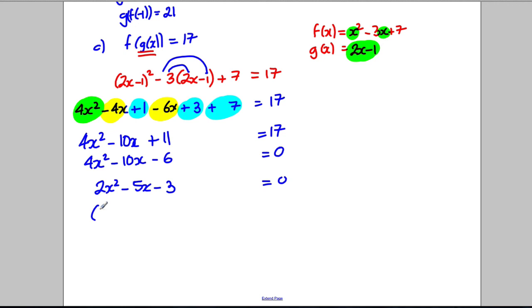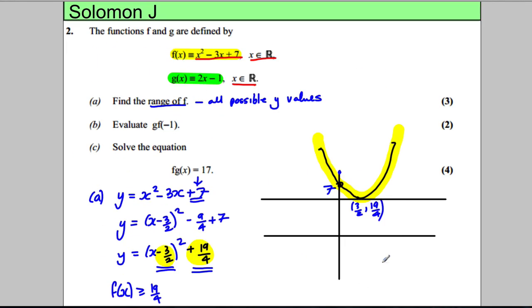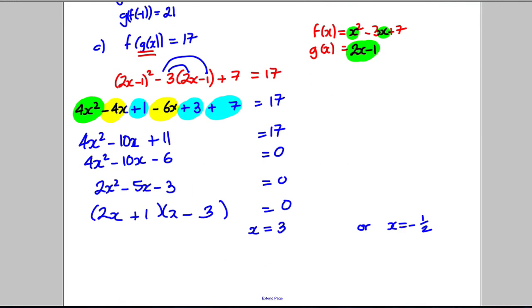Hopefully we can factorize this. So 2x, x here. So multiplying to negative 3 and then combining to an x term of negative 5, it's going to be -3 and +1, and we get ourselves that x is either equal to 3 or x is equal to negative 1 half. And there are two solutions to the question. Double check here, yeah, x is allowed to be anything, so I accept both solutions and we're done.